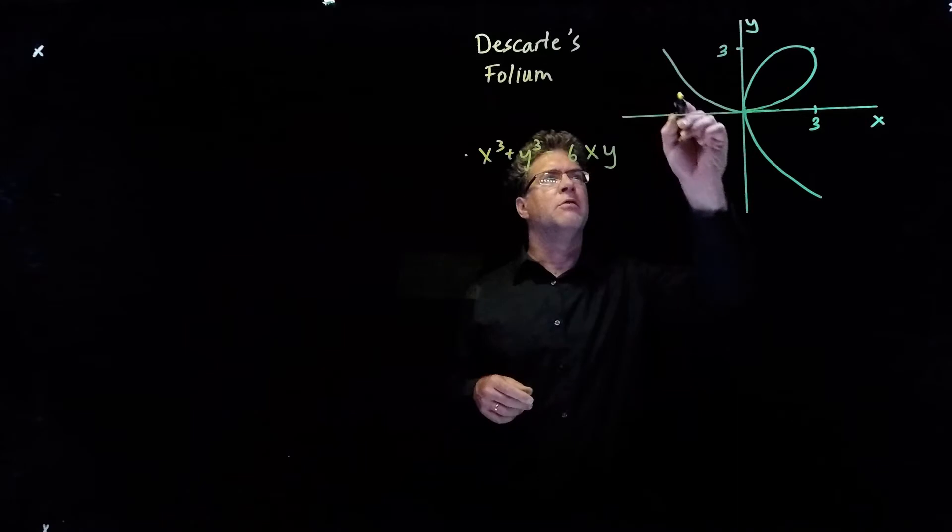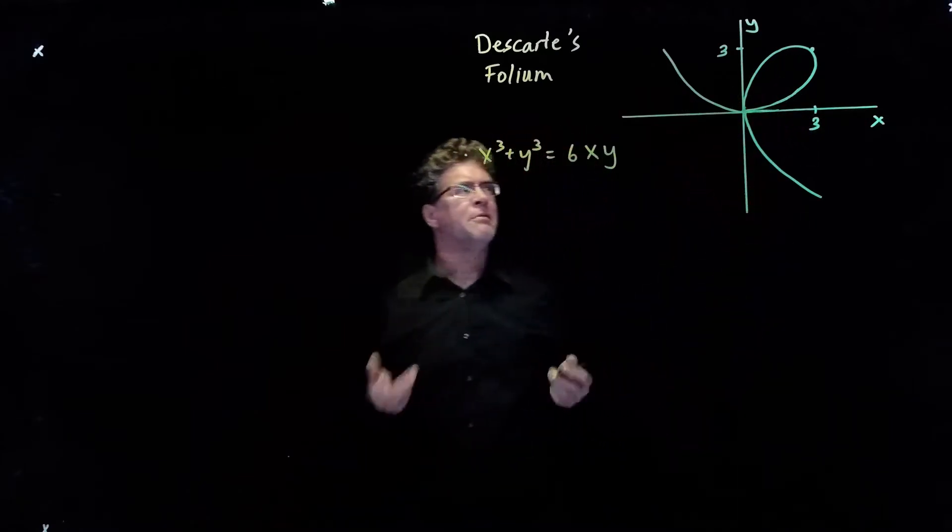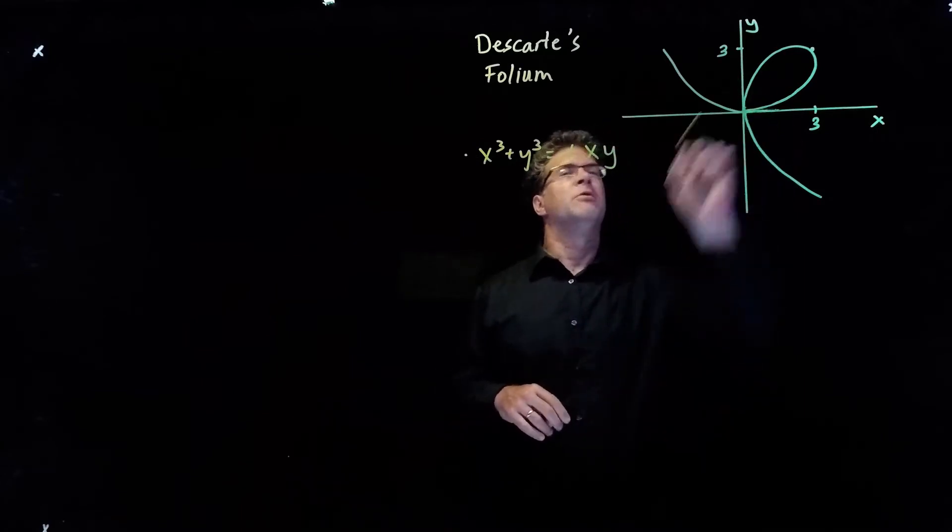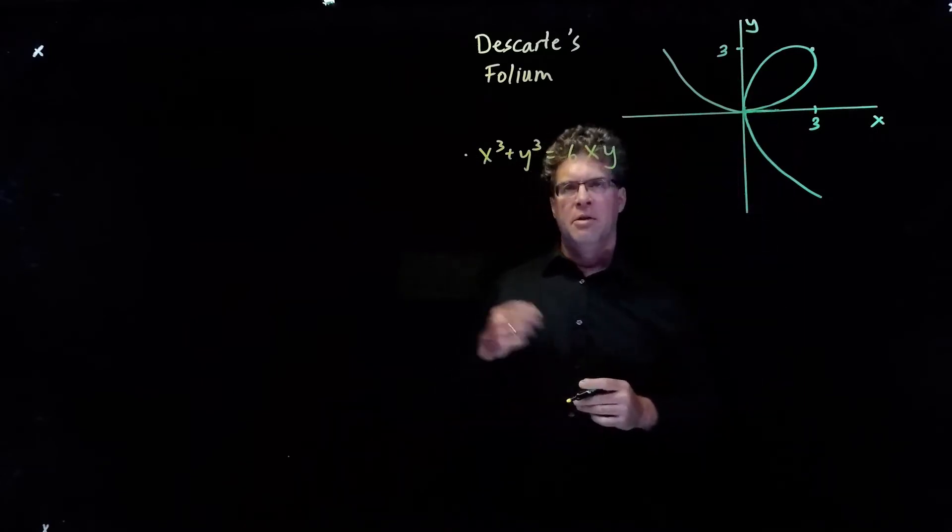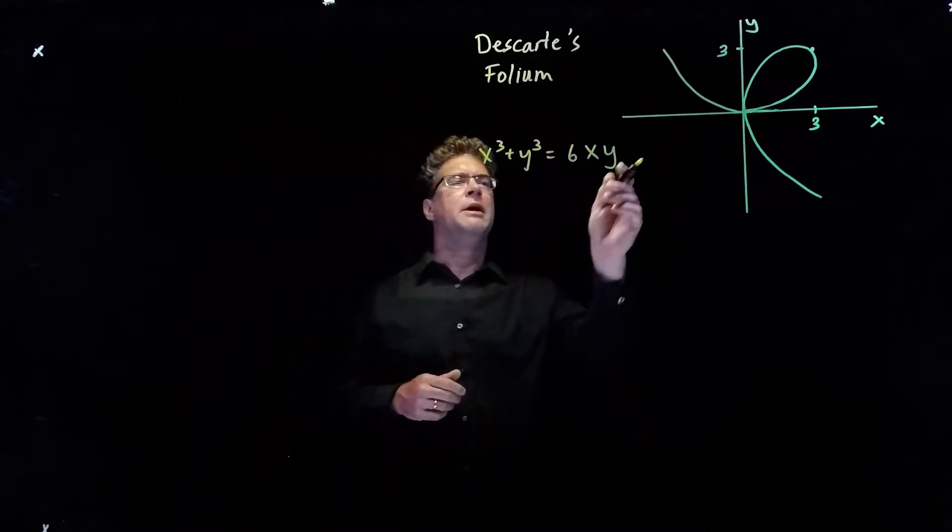We see the curve comes around, loops around on itself, and comes out. So this isn't even a function, because for some values of x, we have multiple values of y. The formula is given implicitly by the formula right here.